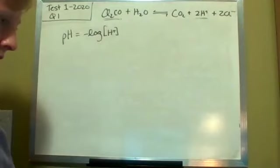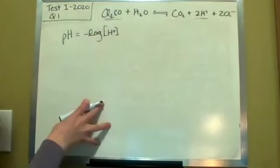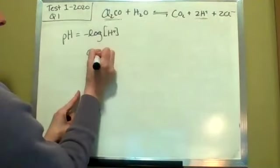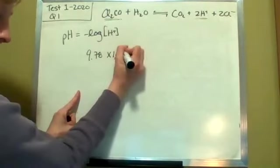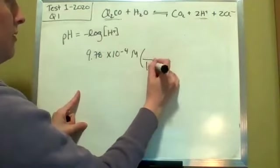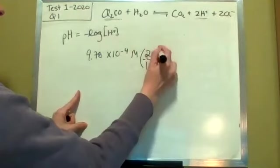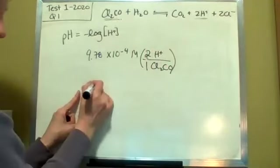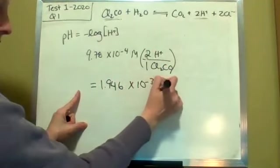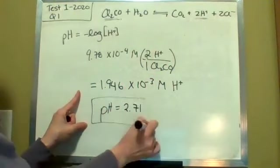So you're going to use our amount that we found, the amount that has reacted, because that's how much we're going to get for our H plus. So 9.78 times 10 to the minus four molar. And then you're using your stoichiometric ratio here. So you know that for every one phosgene, because this is phosgene, you make 2H plus. So you actually have 1.946 times 10 to the minus three molar H plus, which gives you a pH of 2.71.